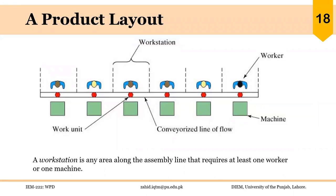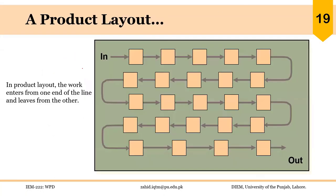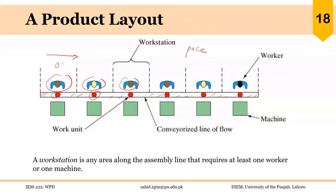In a product layout, material moves from left to right on a conveyor with workers on one side. There is a defined pace or speed of the conveyor so that each worker can perform their required task before the product moves to the next operator. An important challenge is to balance the work of different operators — the time required for each operator should match the time required by other operators.